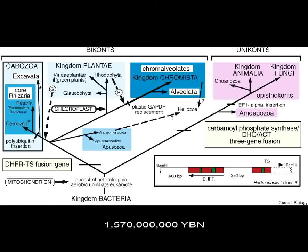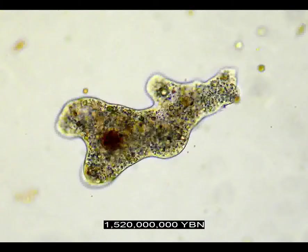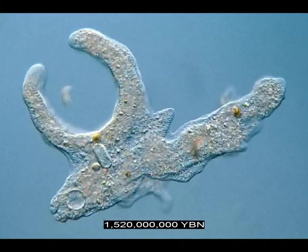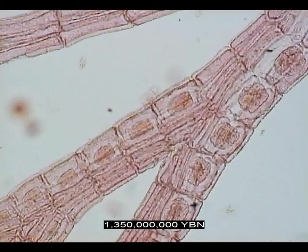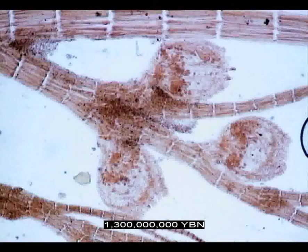Bikonts lead to all chromalveolates, excavates, rhizaria, and plants. Unikonts lead to all Amoebazoa, animals, and fungi. Protists Amoebazoa — amoebas and slime molds feeding using pseudopods. Protists Opisthokonts — ancestor of fungi, choanoflagellates, and animals — with mitochondria with flattened cristae. Filamentous multicellularity in eukaryotes evolves. Differentiation in multicellular eukaryotes: gamete or spore cells and somatic cells. Unlike gamete cells, somatic cells are asexual, non-fusing. Start of death by aging. Haplontic life cycle — eukaryote has multicellular haploid stage.